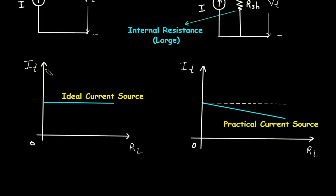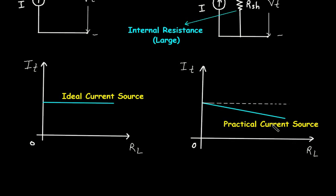The graph plotted between terminal current IT and load RL shows that as the load increases, the ideal current IT remains the same. But in case of practical current source, as the load increases, the terminal current is decreasing.